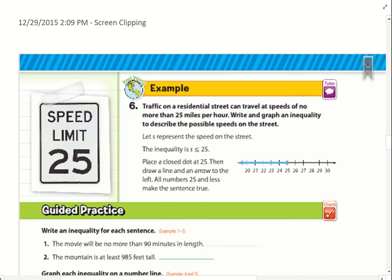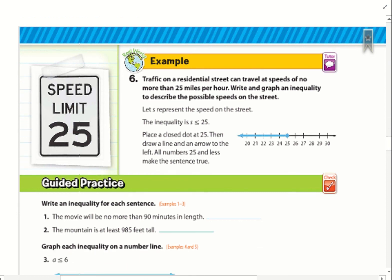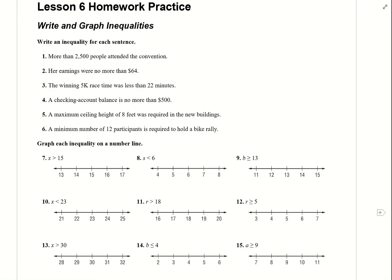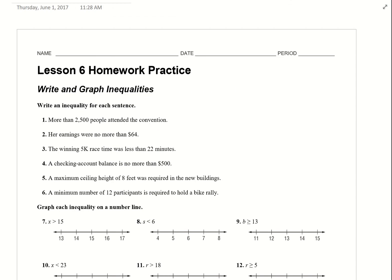Example 6: traffic on a residential street can travel at speeds of no more than 25 miles per hour. Write and graph an inequality to describe the possible speeds. Since I can do exactly 25 miles per hour, I know it's going to have the or equal to sign — my speed has to be less than or equal to 25. I put 25 on the number line with a closed circle and highlight all numbers less than 25. That is the end of the video — thank you for watching.